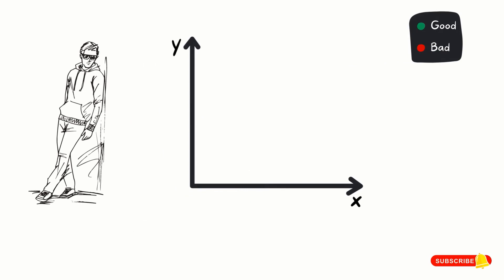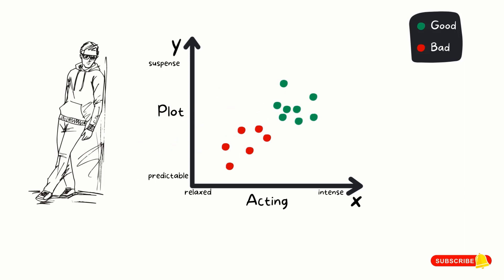This is a graph of the movie plot against the acting, with plot on the y-axis and acting on the x-axis. The acting ranges from relaxed to intense, while the plot ranges from predictable to suspense. From the graph, we can see that Fred likes movies with intense acting and suspense, and he dislikes movies that are predictable with relaxed acting.